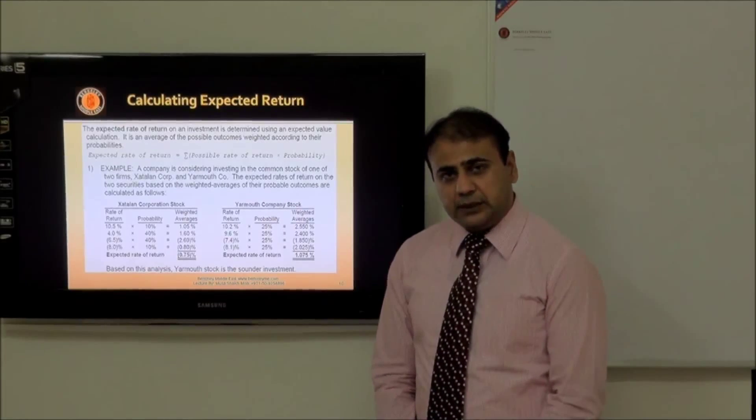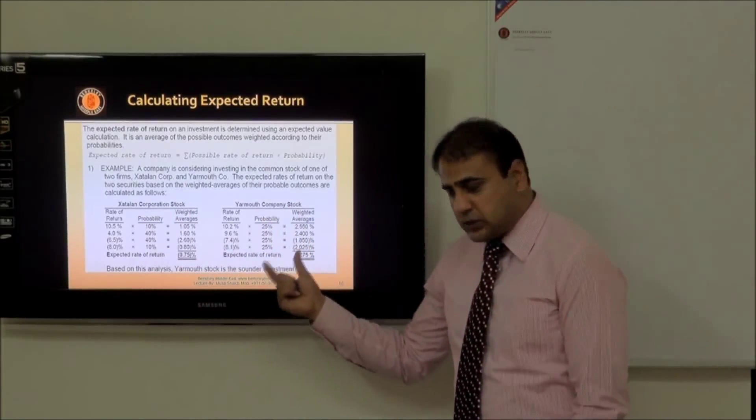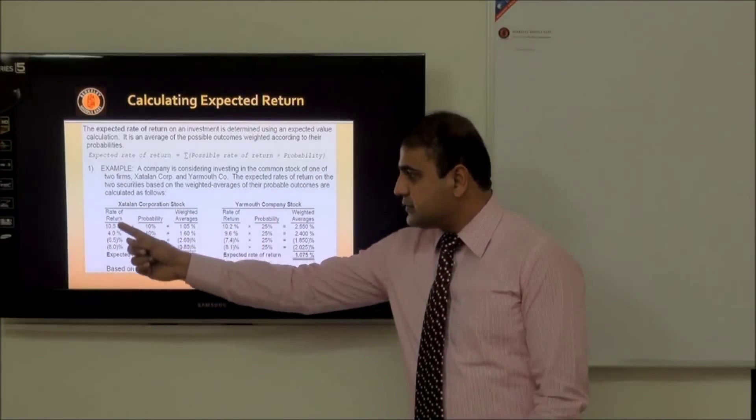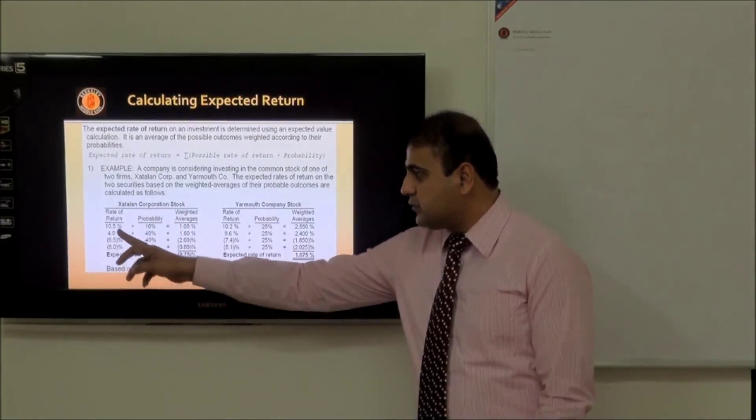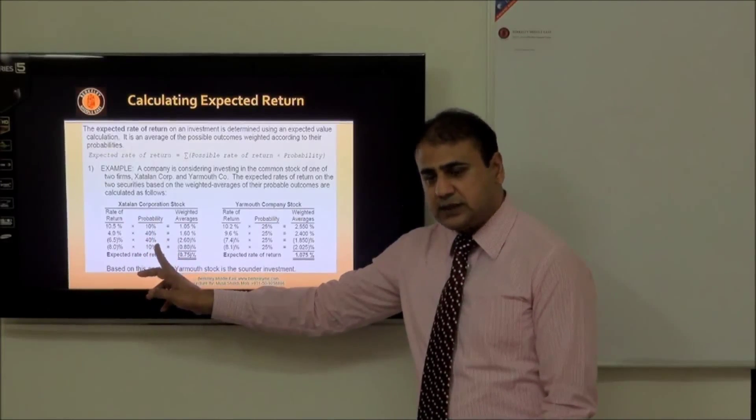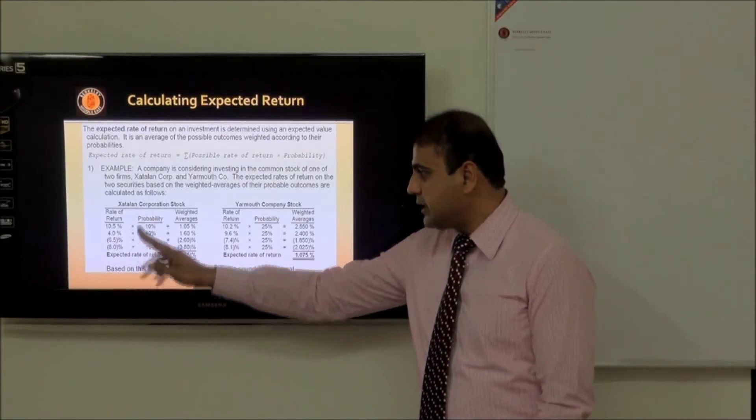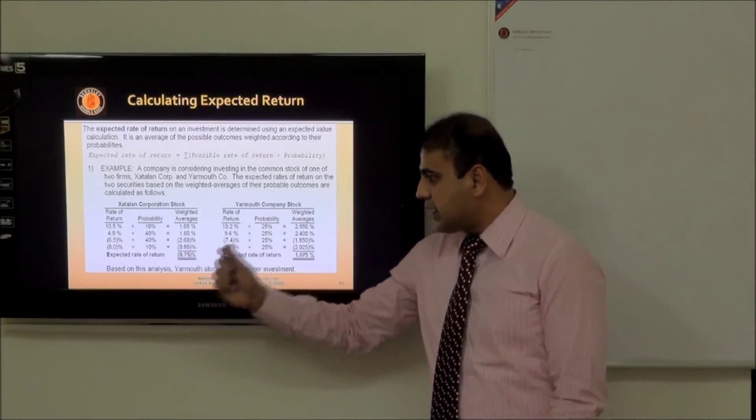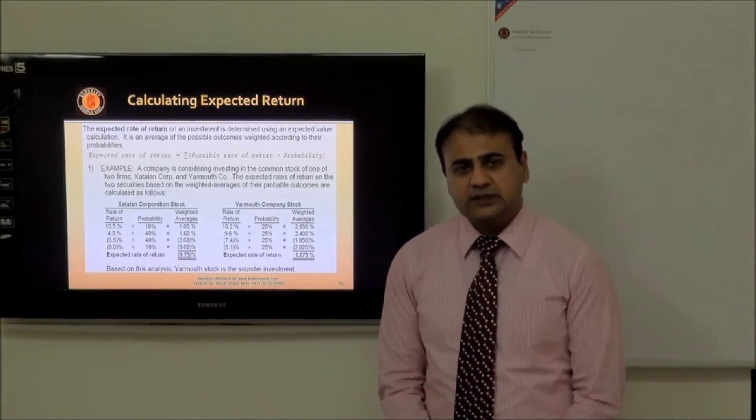Now it's a simple question: expected rate of return equals possible rate of return into probability. This is the one stock, this is another stock - X stock and Y stock. If you see here, rate of return is this much, probability is given. For this we have 10 percent chances, for this 40 percent chances, and for here is 10 percent chances. You have to multiply the rate of return with your probability, you will get the weighted average, and you have to total this one. It will give you the accumulated expected value.